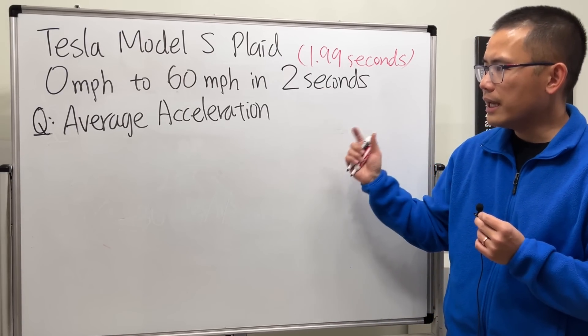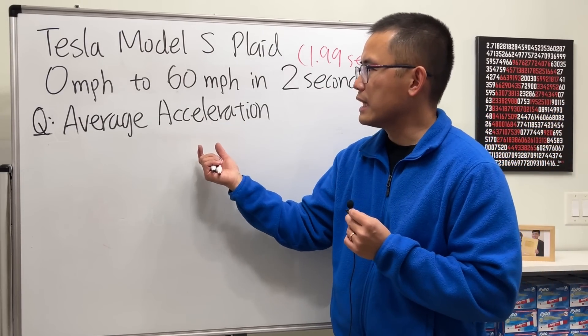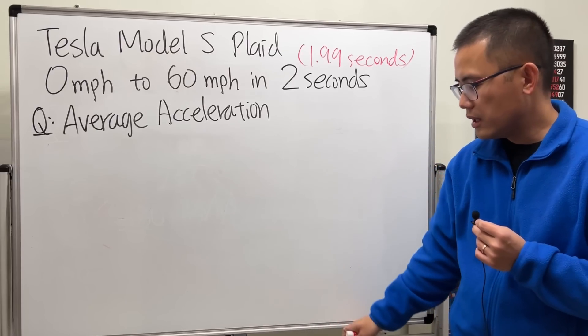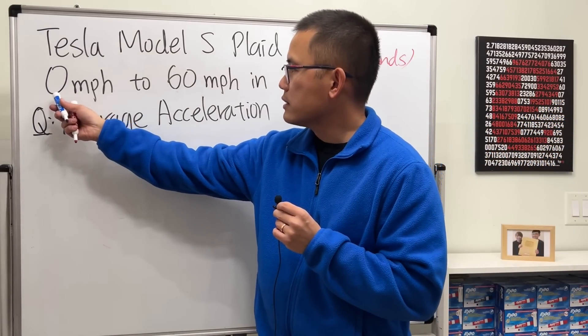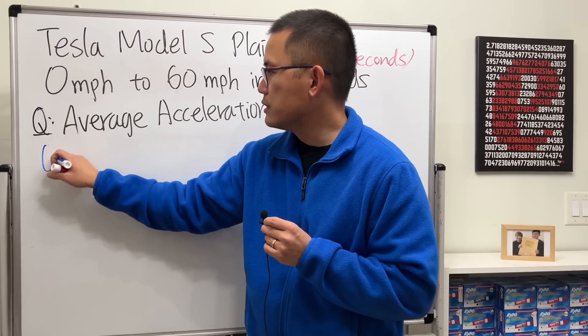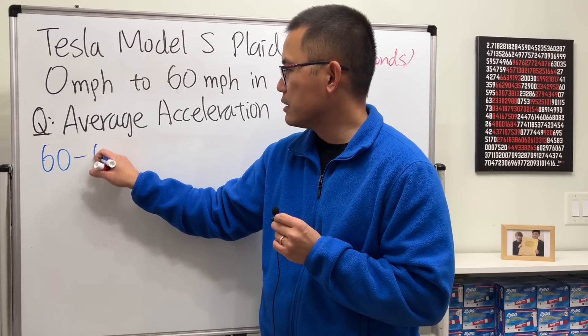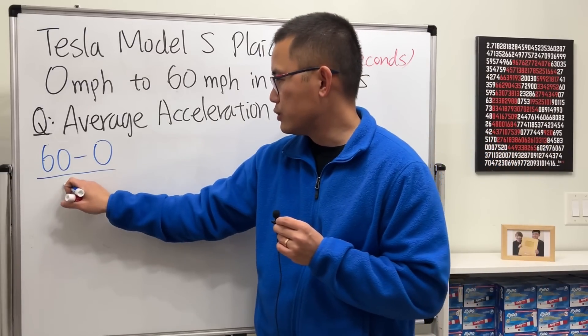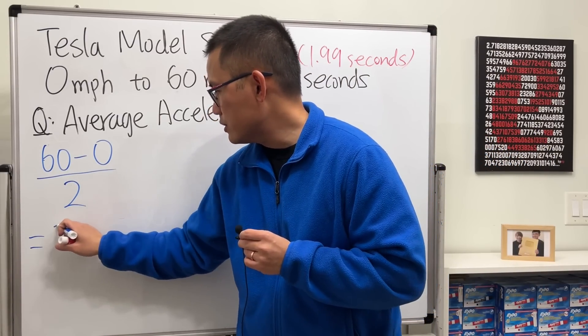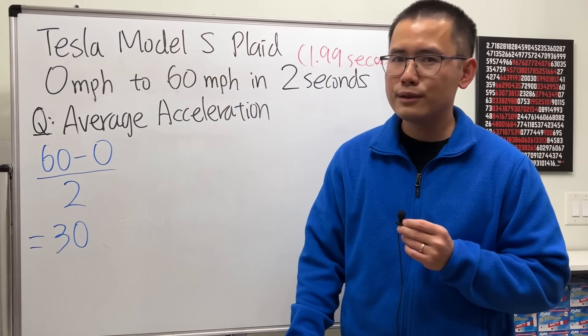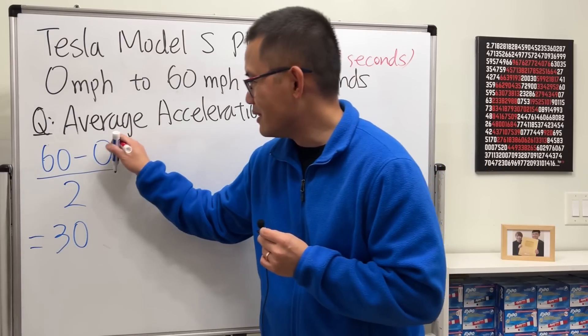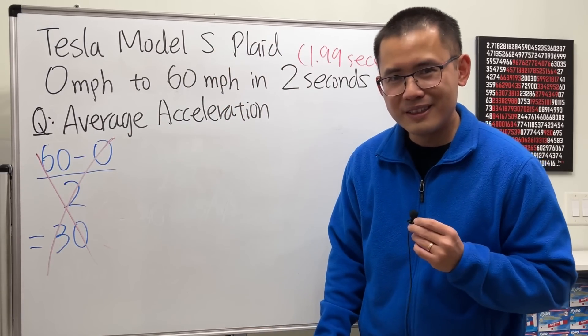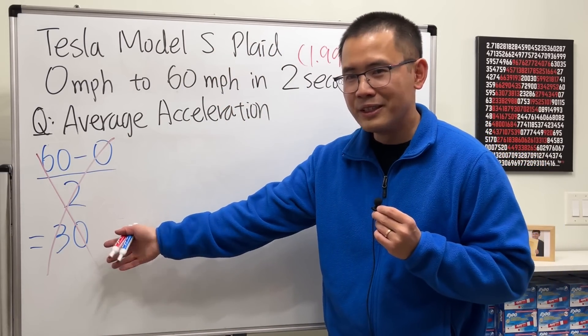Let's just go ahead and compute the average acceleration for this situation. And here's a common mistake: from zero to 60 of course the increase is just 60 minus zero, and then divided by two seconds which is two, and then we just get 30 right? No, this is very wrong.